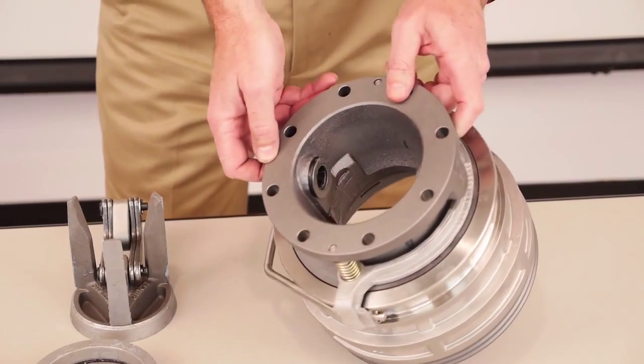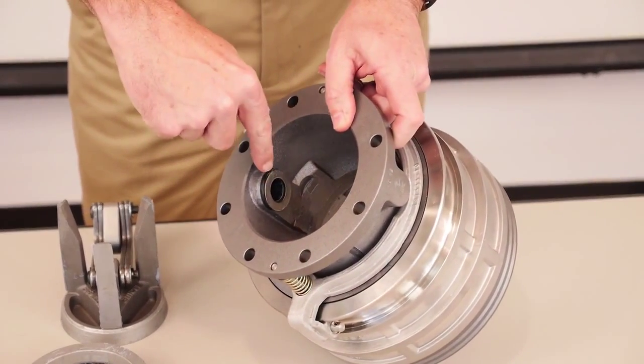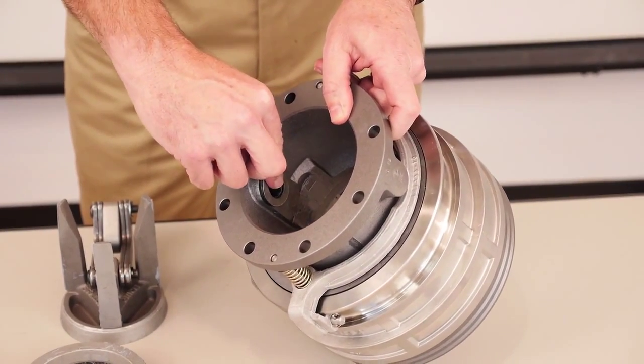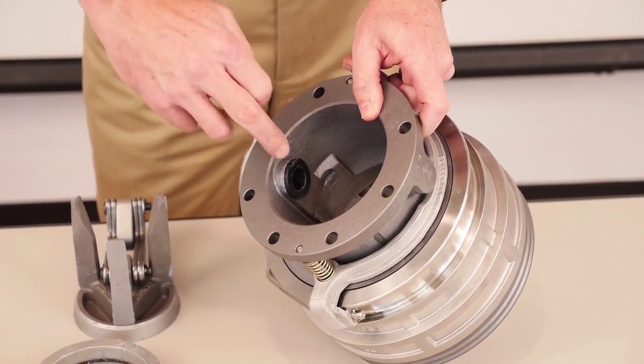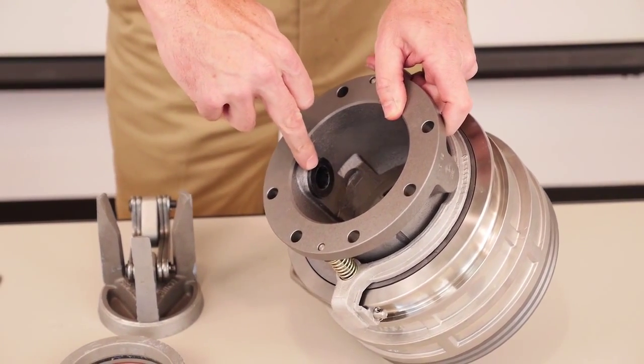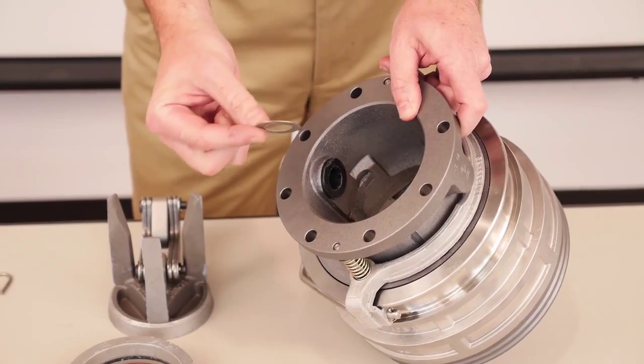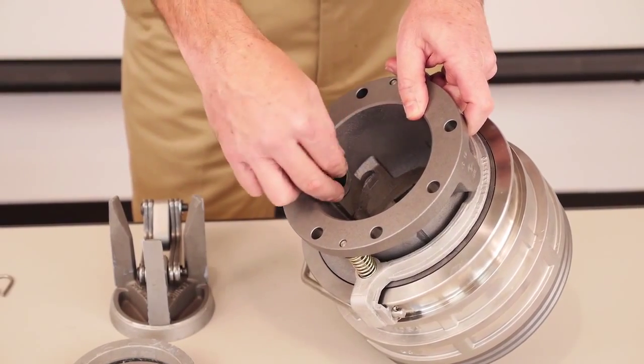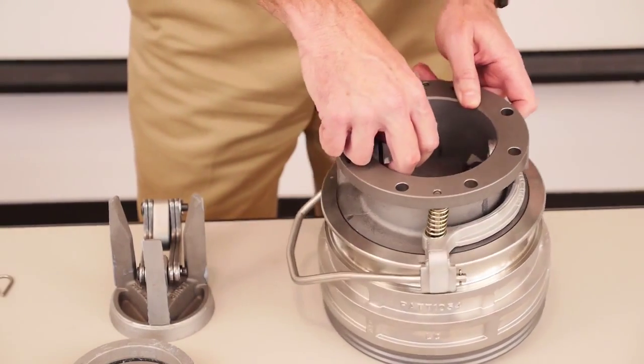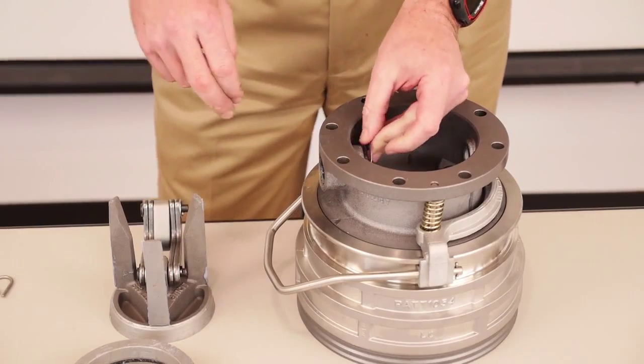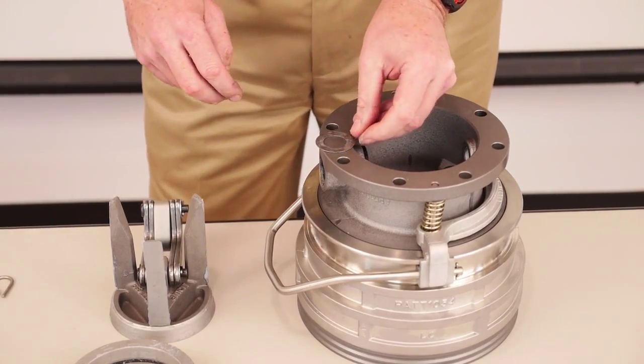An important note here is you can see there's a small washer. When you disassemble, it may stick to the underside of this bush. So we want to make sure when we reassemble that that washer does go back in place. So let's go through the assembly process.